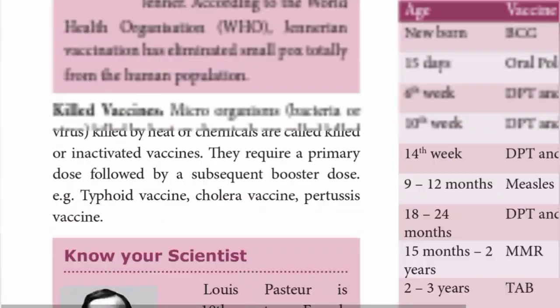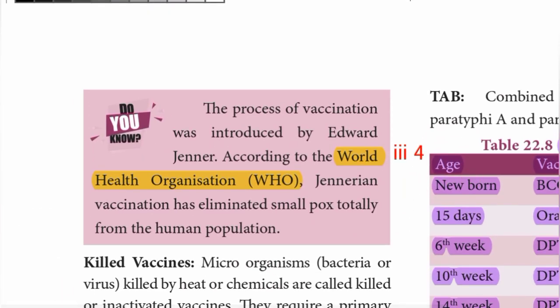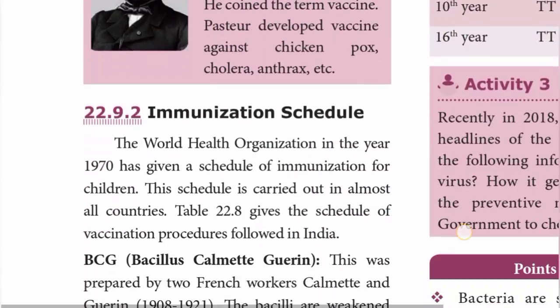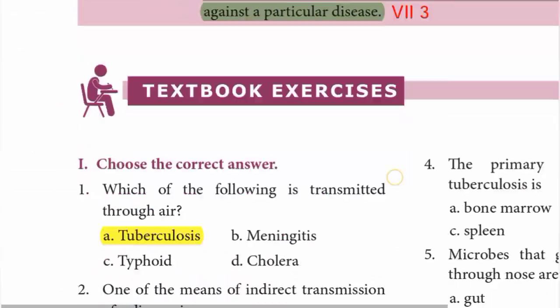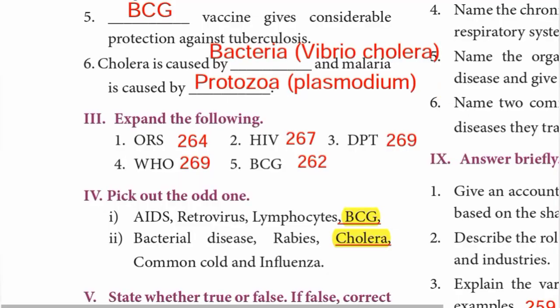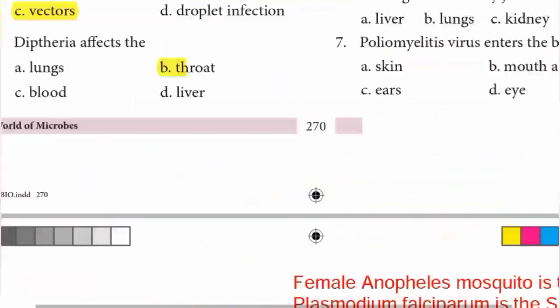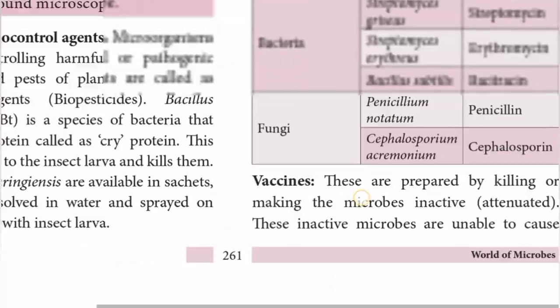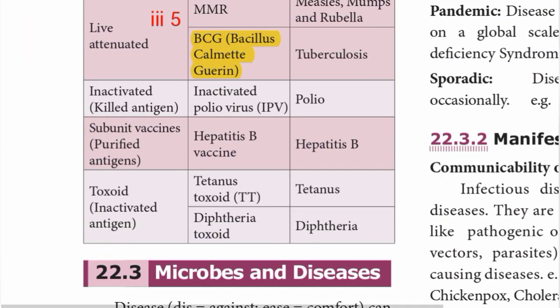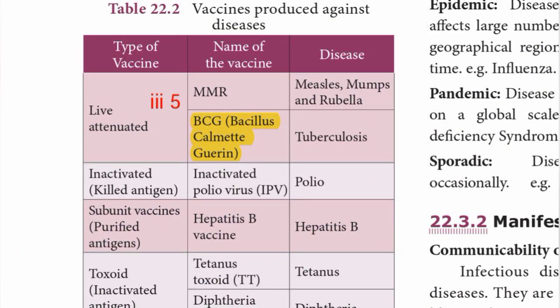Number four — WHO stands for World Health Organization. Number five — BCG, page 262. BCG stands for Bacillus Calmette-Guérin, which is the tuberculosis disease vaccine.